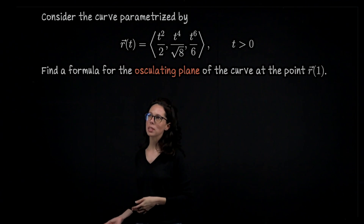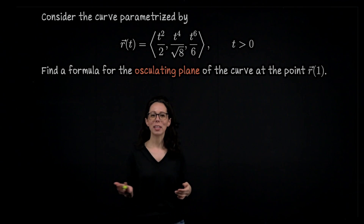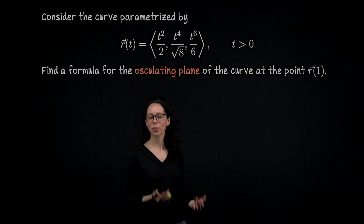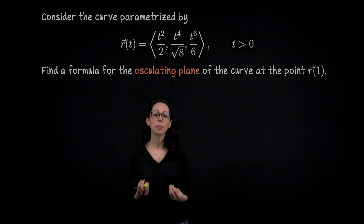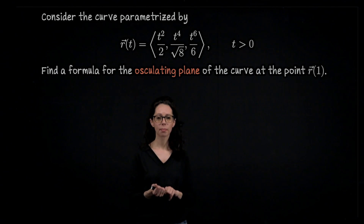There are going to be a lot of steps in this computation, but I'd like to do this as efficiently as possible. Whenever I can, I'm going to plug 1 in for the parameter t. At other moments, like when I need to take a derivative, I need to make sure I'm still working with the parameter t.